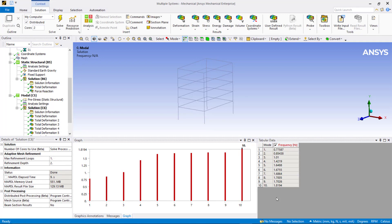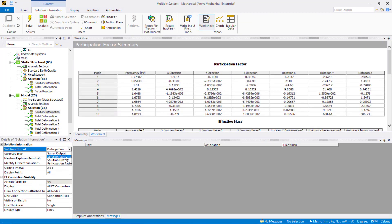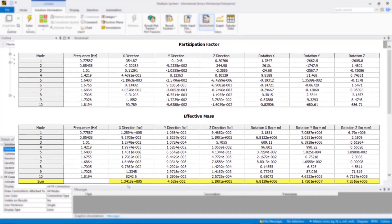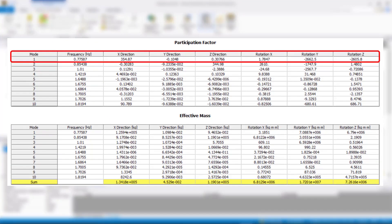After modal is complete, highlight solution information branch. Switch to participation factor summary. Note the magnitude of participation factor for mode 1. This mode dominates excitation in X direction.